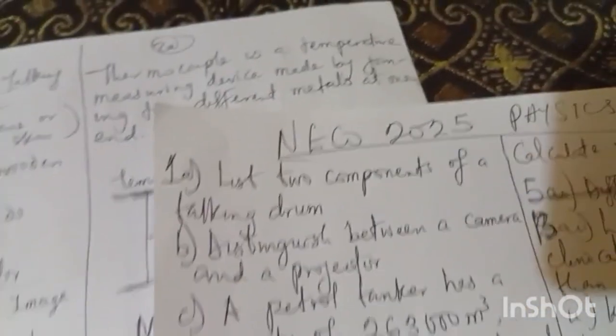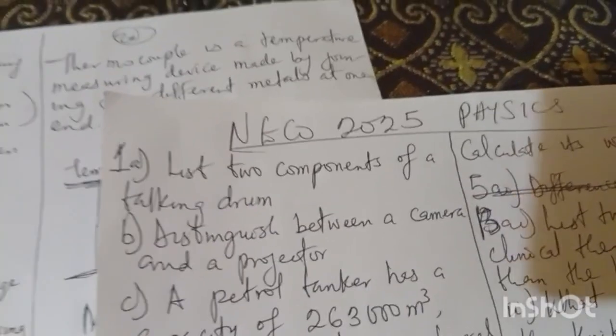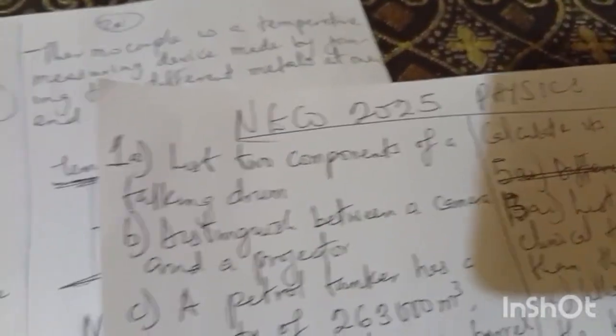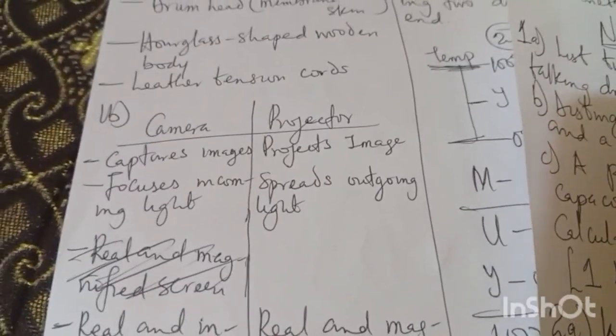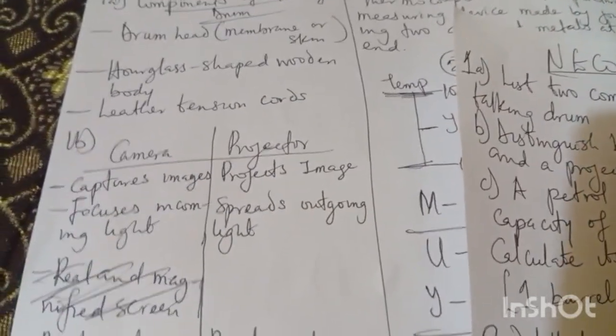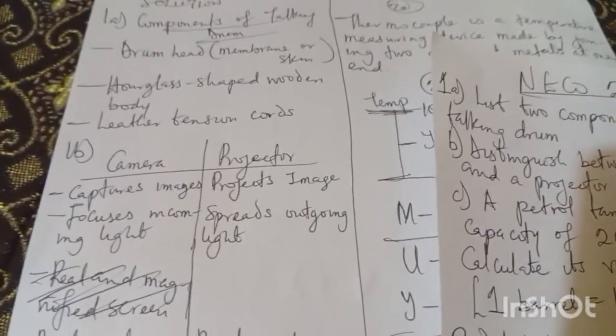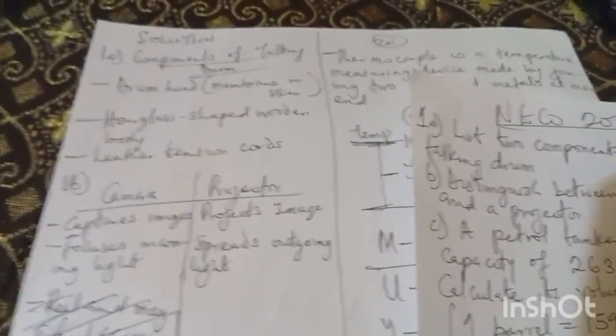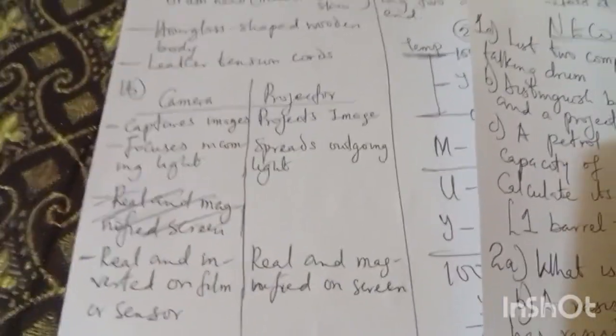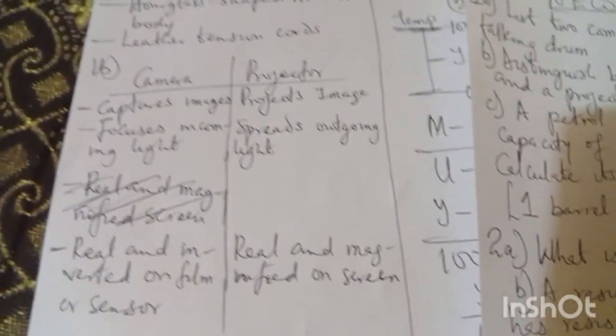When finished, I go to 1b. For the issue of 1b, distinguish between a camera and a projector. You know what a camera can do - a camera captures images while a projector projects images. When talking about focus, a camera focuses incoming light, that is when the camera will be able to show itself. But for the projector, it is spreading out the outgoing light. Lastly, a real inverted image can be experienced on the film or sensor of a camera, while a projector gives real, magnified images on the screen.